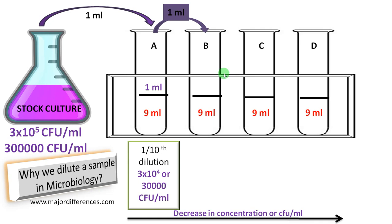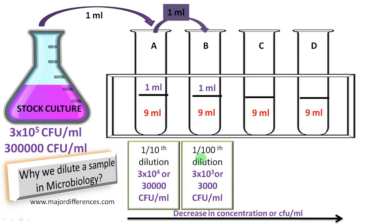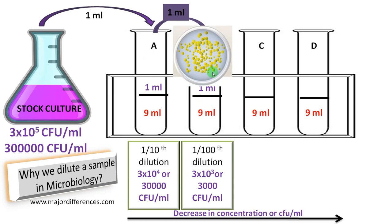We transfer 1 ml to test tube B, into the 9 ml of diluent. Now we have further diluted 10 times, so the total dilution from the stock solution is 1/100. Therefore the CFU comes down to 3,000 CFU per ml. Suppose this is the colony plate we got after culturing from test tube B — this is still overcrowded.